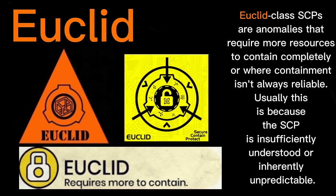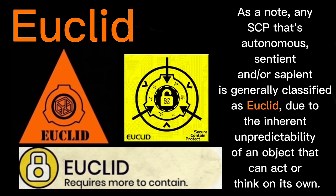Euclid class SCPs are anomalies that require more resources to contain completely, or where containment isn't always reliable. Usually this is because the SCP is insufficiently understood or inherently unpredictable. Any SCP that's autonomous, sentient, and or sapient is generally classified as Euclid, due to the inherent unpredictability of an object that can act or think on its own.